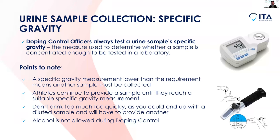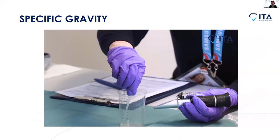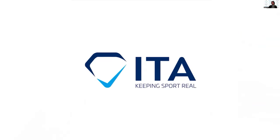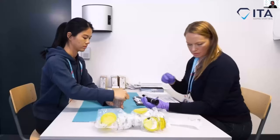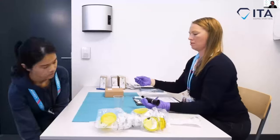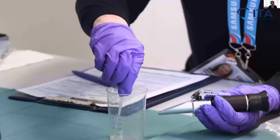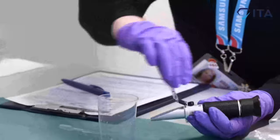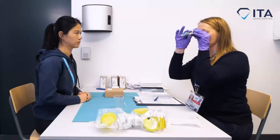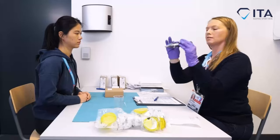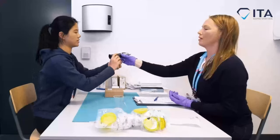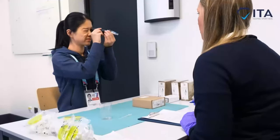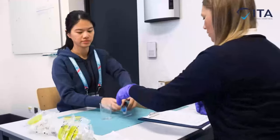Let's take another quick look at a video showing how the specific gravity measurement is performed. In the video, the DCO asks the athlete to take the lid off the vessel, then notes down the specific gravity reading after checking it with the athlete.